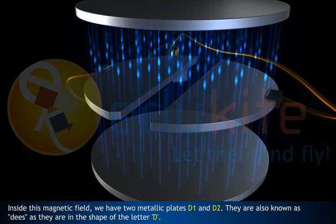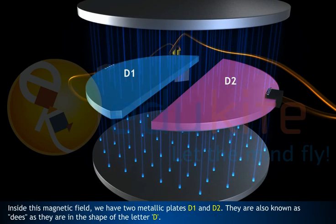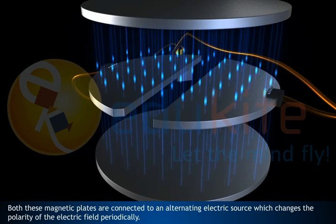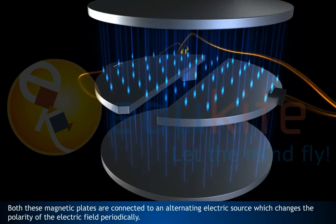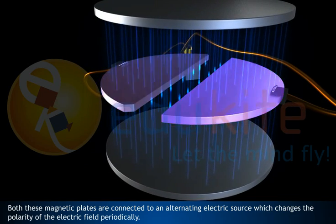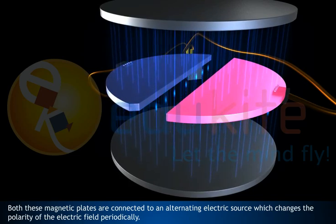Inside this magnetic field, we have two metallic plates D1 and D2. They are also called Ds as they are in the shape of the letter D. Both these plates are connected to an alternating electric source which changes the polarity of the electric field periodically.